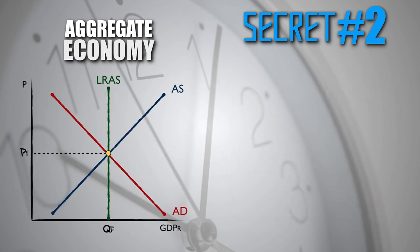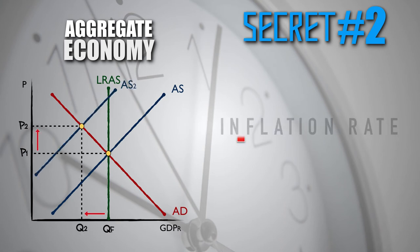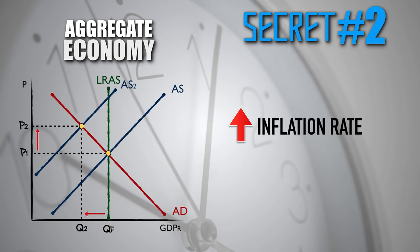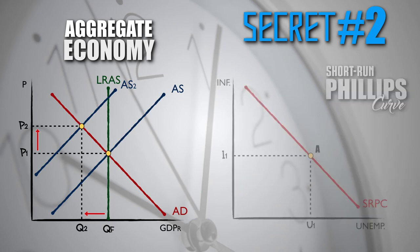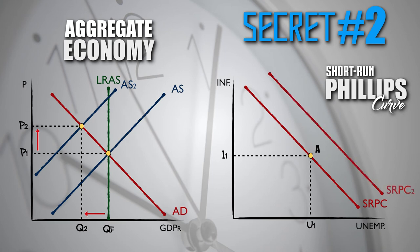When a change occurs in RAP that causes short-run aggregate supply to decrease, the short-run aggregate supply curve will shift to the left. To show the increase in the inflation rate and the increase in the unemployment rate that accompanies a decrease in short-run aggregate supply, the short-run Phillips Curve will shift to the right. Leftward shift of the short-run aggregate supply curve — rightward shift of the Phillips Curve.